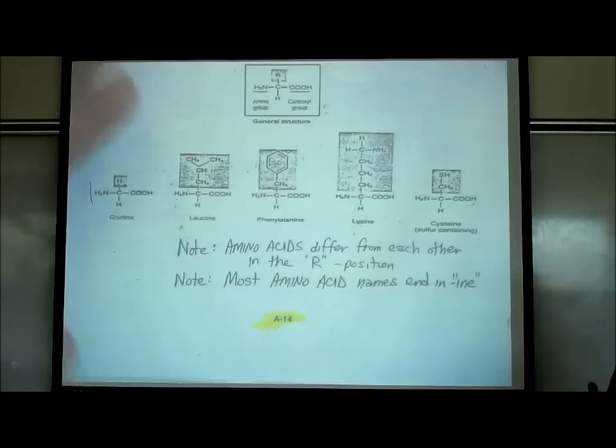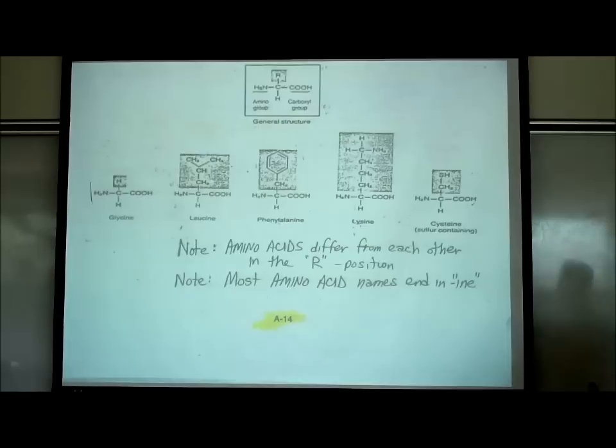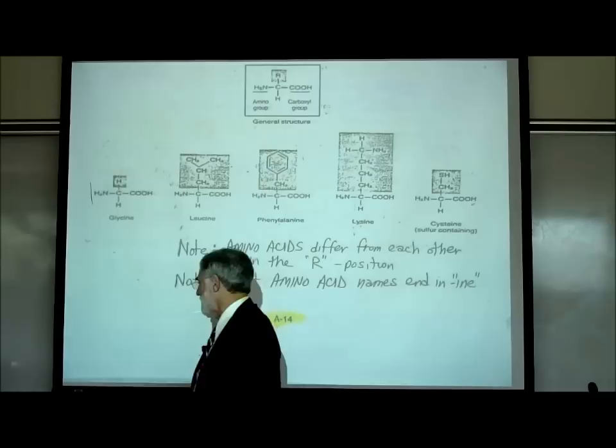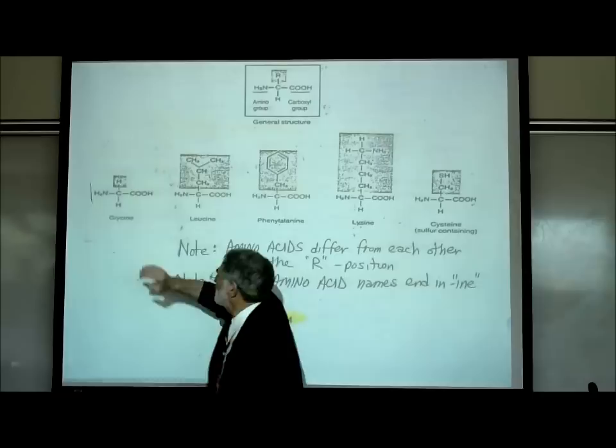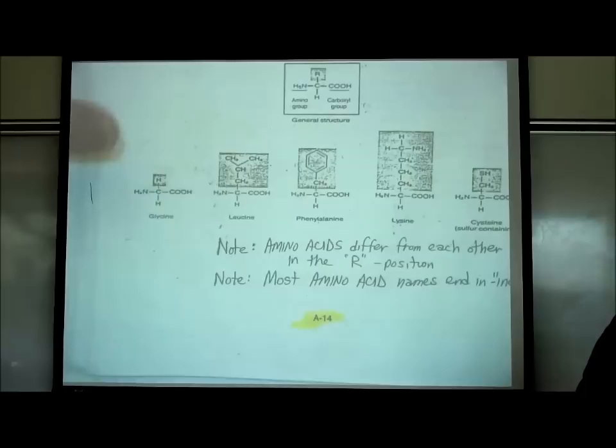On A14, in the lower half of the page, we saw five different amino acids: glycine, leucine, phenylalanine, lysine, and cysteine. Most amino acids have the ending '-ine,' with some exceptions. Glycine just has a hydrogen — it's the simplest of all the amino acids. In contrast, phenylalanine has a benzene ring structure and is more complex.